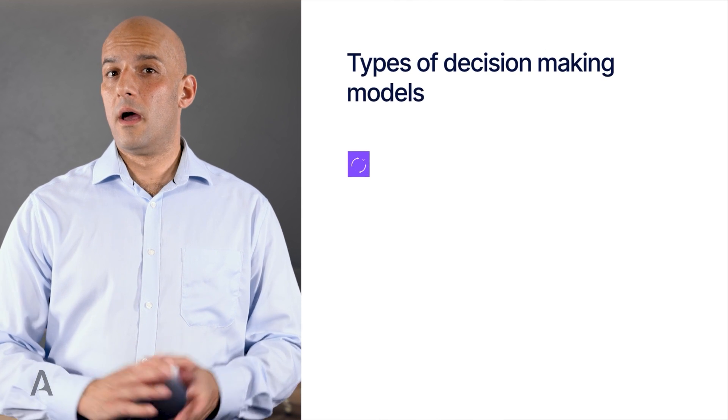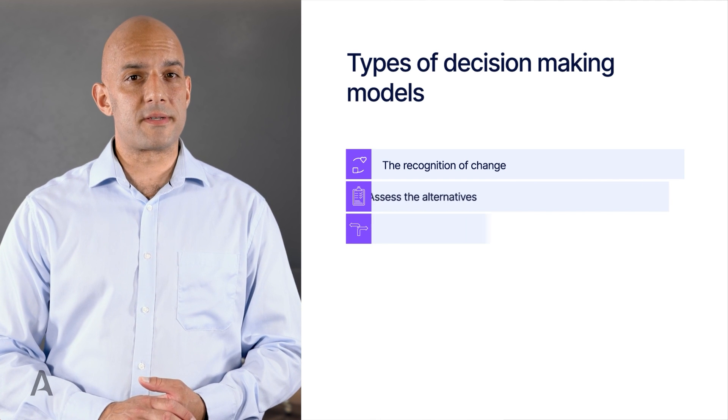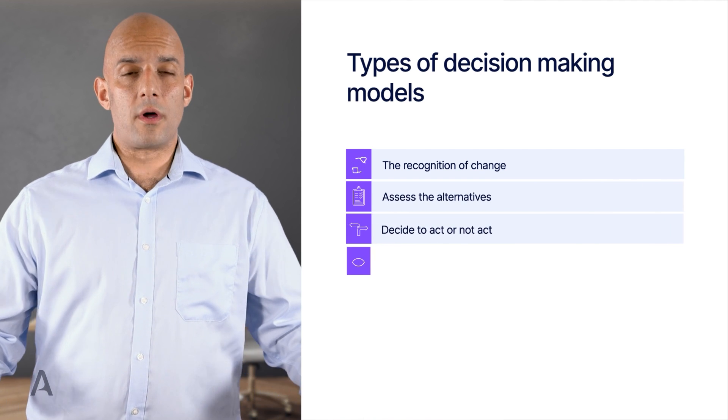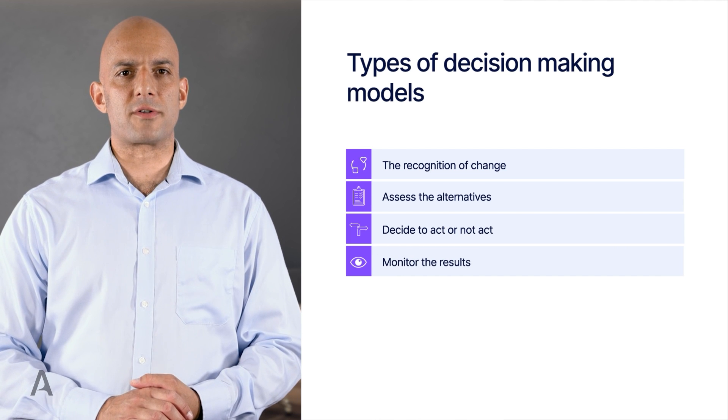There are several different types of decision-making models that can be used, and we will run through a few of them shortly. Overall, all models can be summarized as follows: the recognition of change, assess the alternatives, decide to act or not act, monitor the results. So let's take a look at a few of these models.